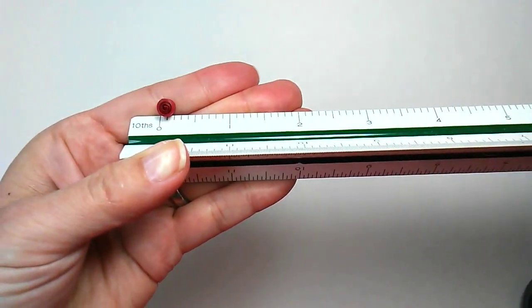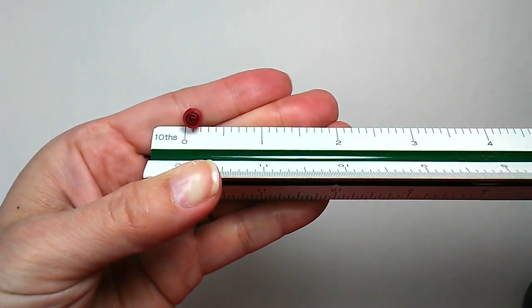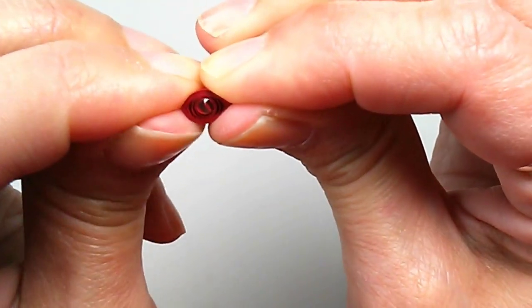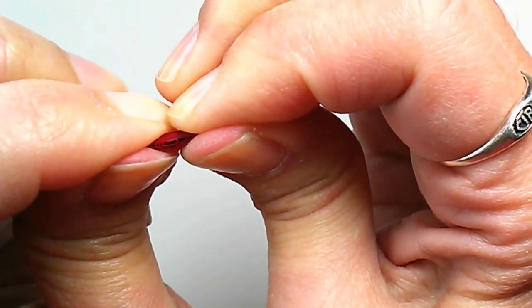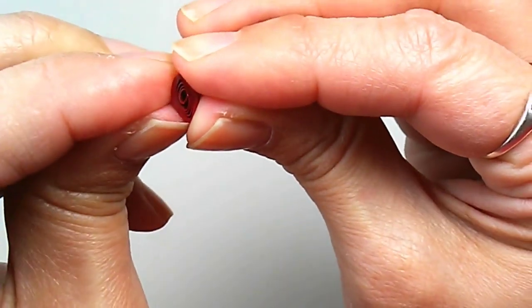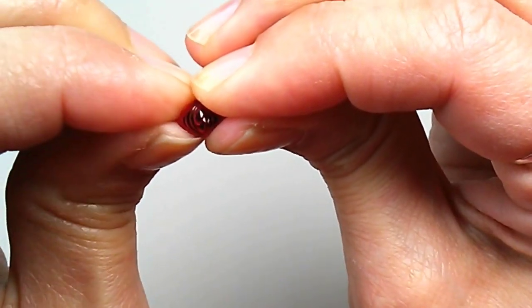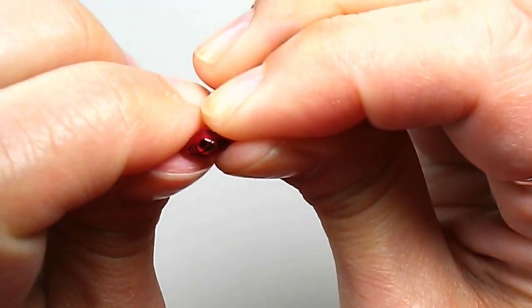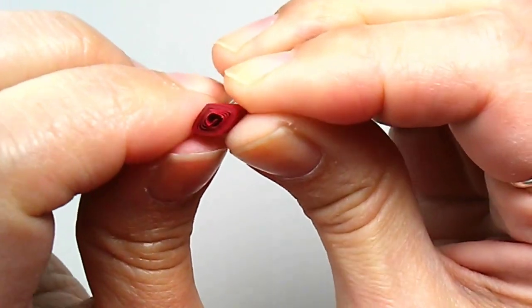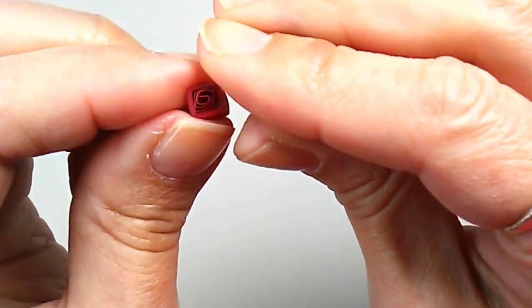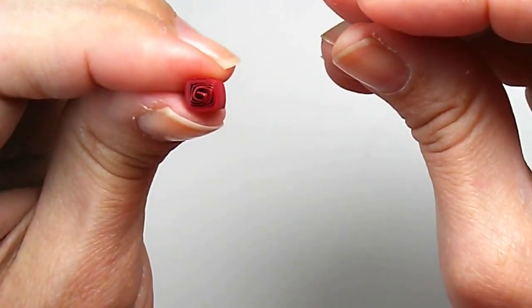And for reference this coil is about 2 tenths of an inch wide. To shape it, squeeze opposite sides, then rotate and squeeze again, trying to get it right in the middle. I like to squeeze one more time to firm up the shape, and that is a quilling square.